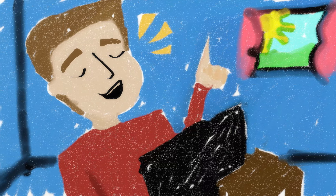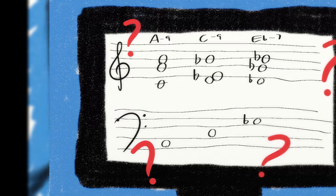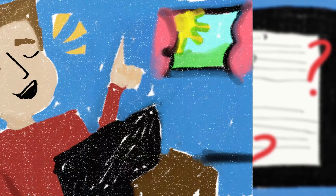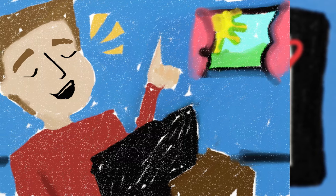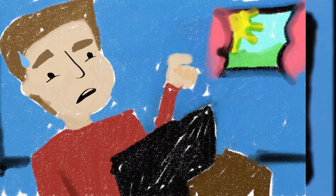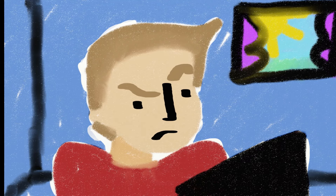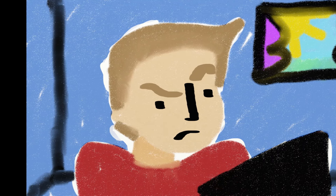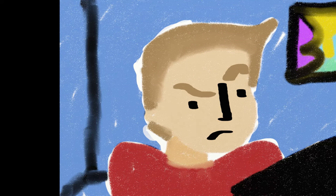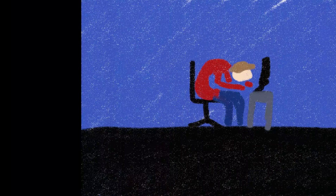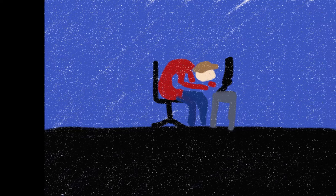Once in a while, he'd come across a progression that seemed rather strange. An A minor to C minor to E flat minor — that's… well, what is that? Try as he might, our young nerdy friend could not for the life of him figure out what these progressions were supposed to be. Where are all the dominants? He'd cry. Where is this going? What key are we even in?